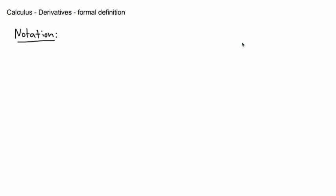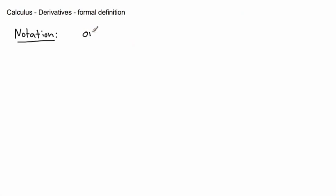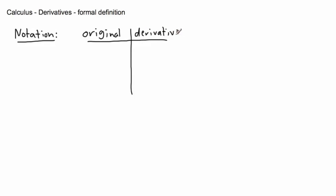Here I'm going to show you some of the notation that we use for derivatives. Remember in calculus we do two things: we either take derivatives or integrals. Derivatives are all about finding the slope of the tangent line. The notation we use — there are maybe three different, most common ways of writing things. So I'm going to show you the original and then the derivative.